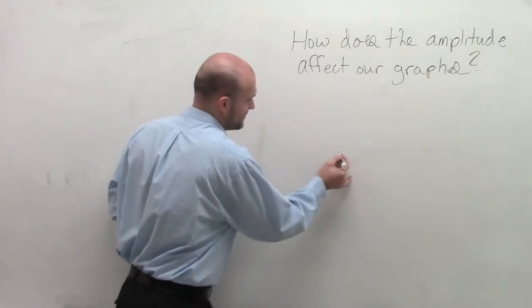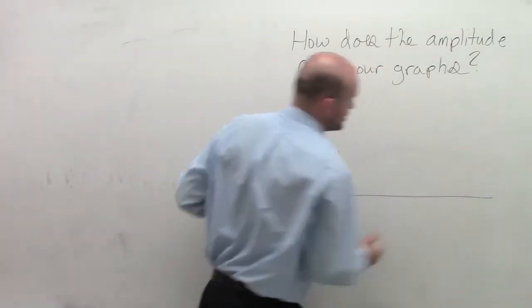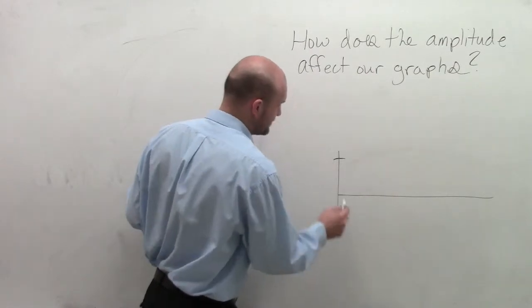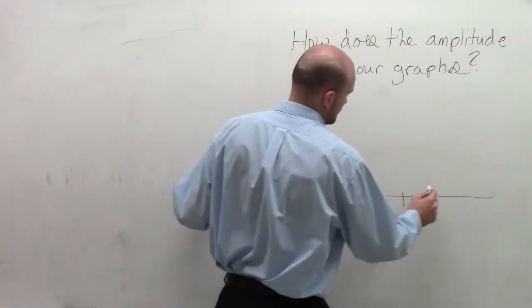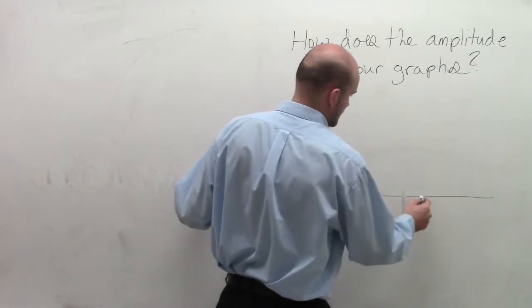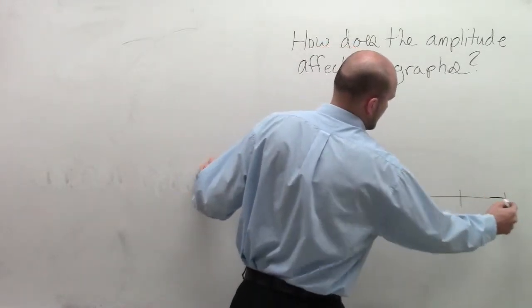So let's graph the sine function. I'm just going to graph an initial period. We know that the parent graph of the initial period goes up to 1 and then goes down to negative 1. Let me mark 1, 2, 3, 4.